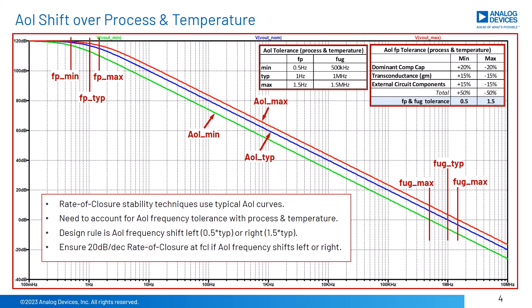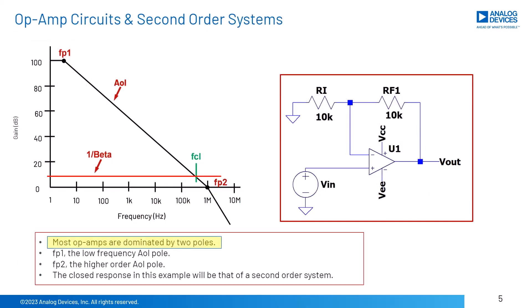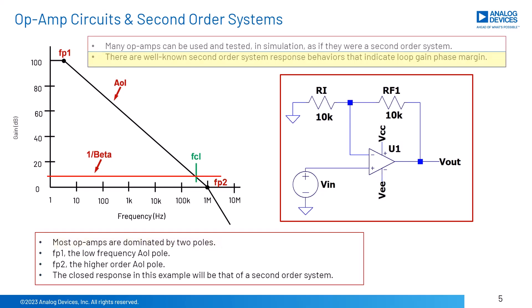When we want to stabilize op-amp circuits for robust designs across variations in process and temperature, we utilize 1-over-beta and loaded AOL curves. It is important to consider that the typical AOL value given in the datasheet can fluctuate by ±50% to the low-frequency pole. Many op-amp circuits are dominant two-pole systems. Shown here is a typical two-pole AOL with a closed-loop gain of 2, and this circuit's behavior will reflect that of a dominant two-pole system.